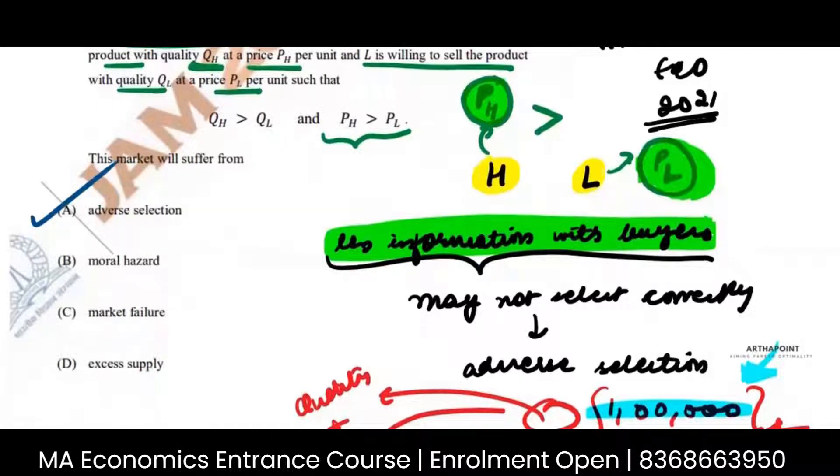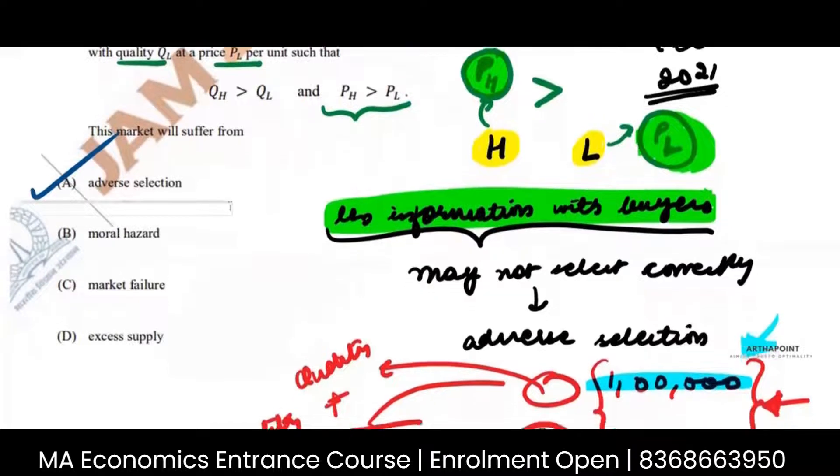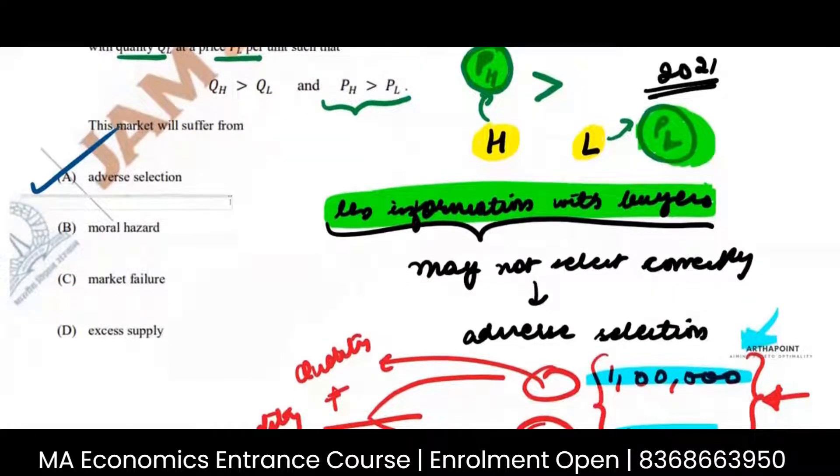Before the transaction takes place, it is adverse selection. After the transaction takes place, it is moral hazard. Remember that. Now let us go ahead and let us talk about the next thing.